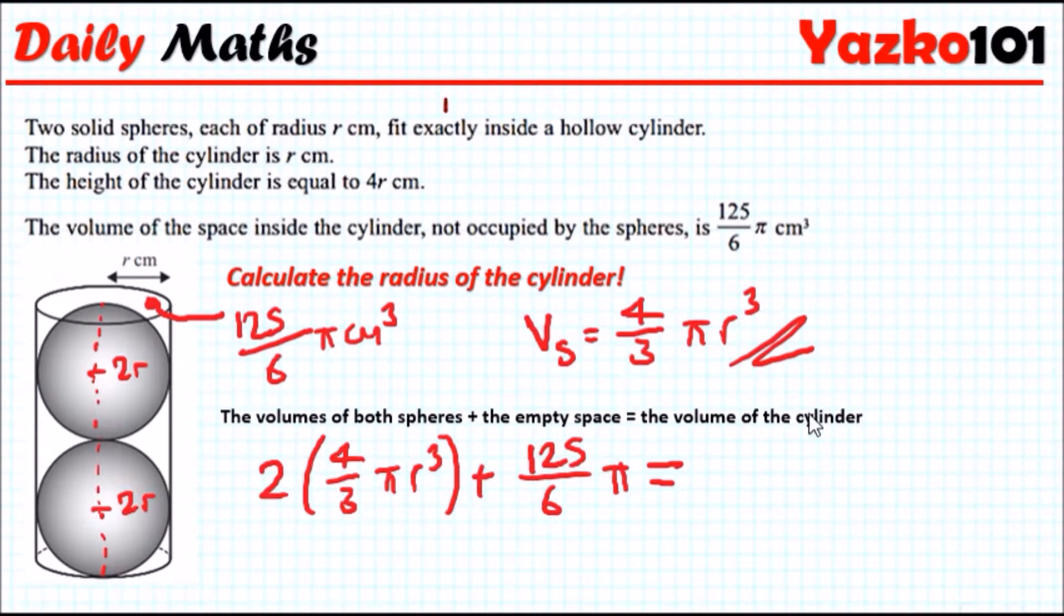The volume of a cylinder is actually easy. The volume of a prism tells us that the area of the cross section, which is a circle, times the height will give you the volume. So the area of this cross section is π r squared times the height, which is 4r. Now we have our equation to solve.